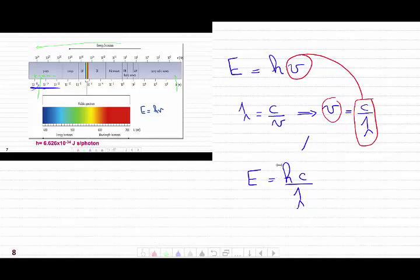h here is Planck's constant, and the value of that is 6.626 times 10 to the power minus 34 joules per photon.